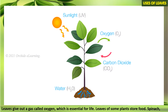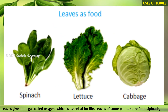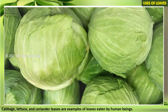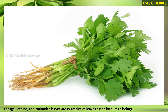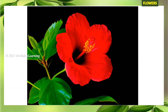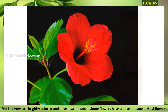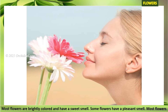Leaves of some plants store food. Spinach, cabbage, lettuce, and coriander leaves are examples of leaves eaten by human beings.